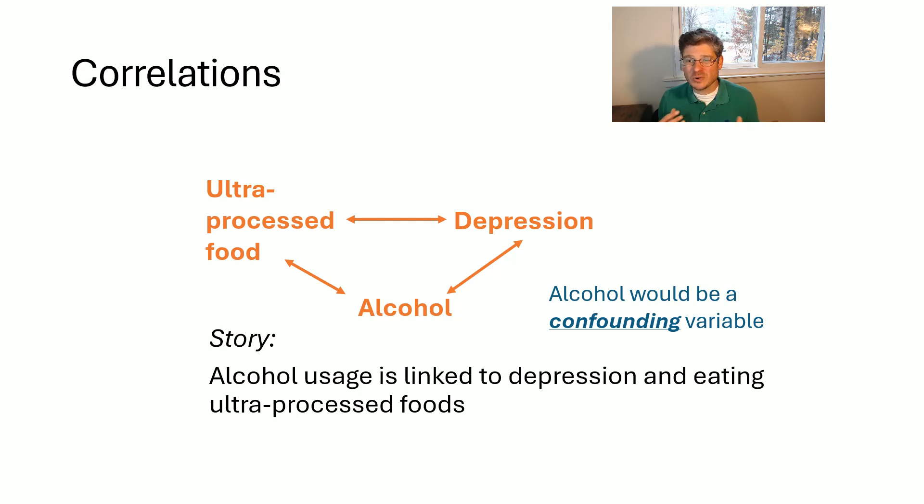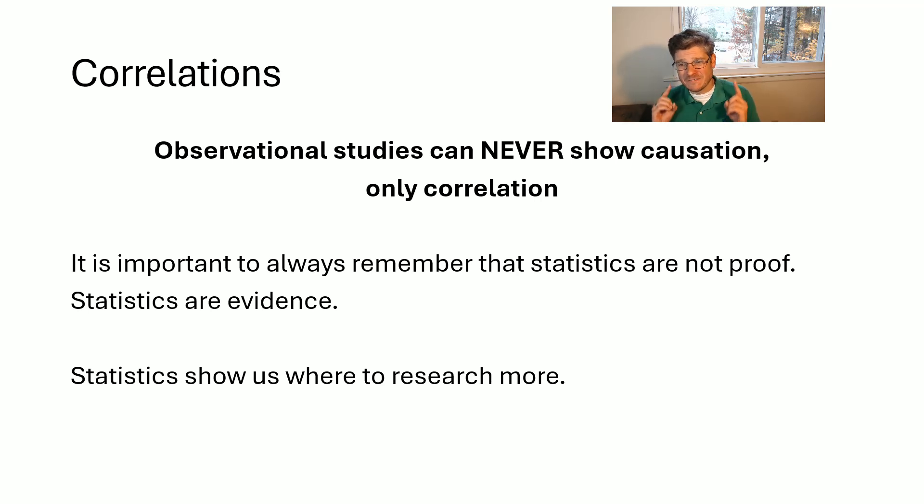And so again, this cause and effect, this correlation can be very, very difficult to figure out what is actually causing what. So it is very, very, very important. The number one takeaway here is that observational studies, which is the majority of studies we hear about, they can never show causation. They can only show correlation. They can only show that two things are going to be related to each other. And it's important to remember, too, that when we do statistics, our statistical analysis is never going to be proof of anything. Our statistical evidence is, well, it's just that. It's evidence. We can build evidence towards a conclusion one way or the other, but it is never going to be definitive proof. And a lot of times statistics really is just there to show us where we need to research more. We can see things that are out of the ordinary and we know that, hey, I got to look a little bit deeper at that particular thing.